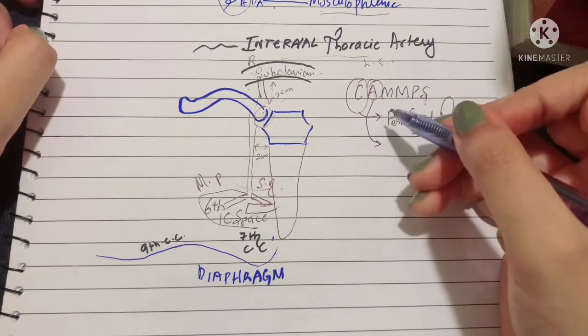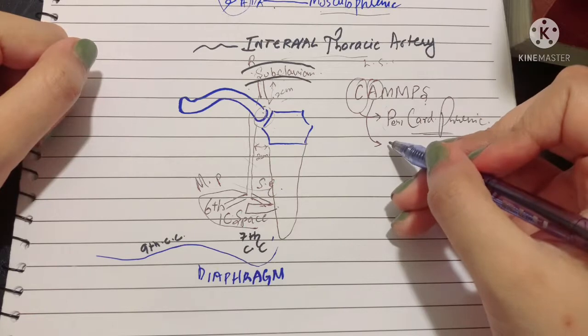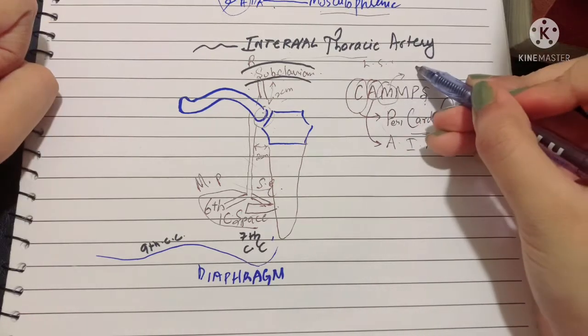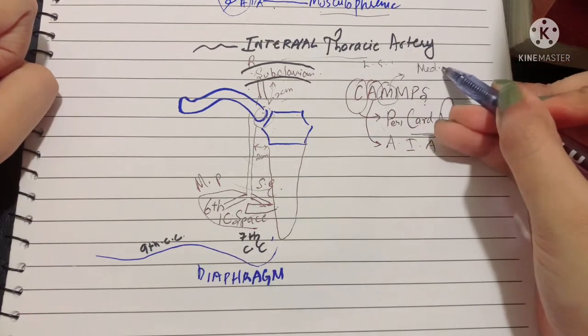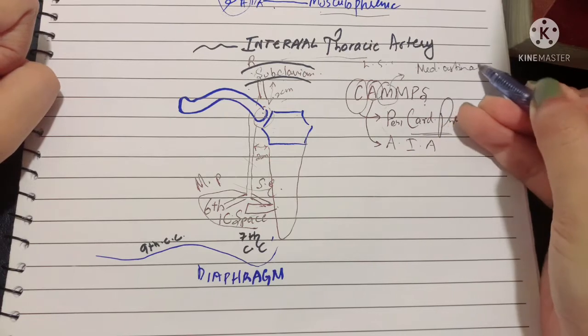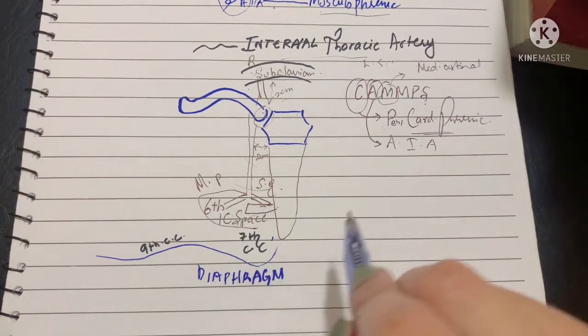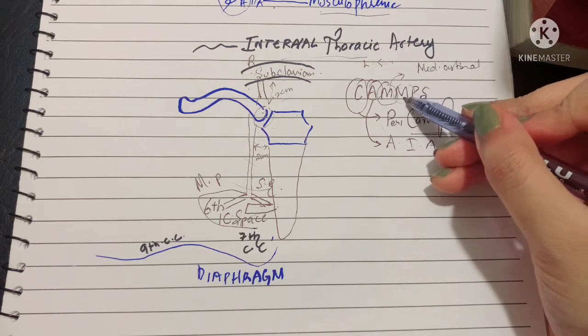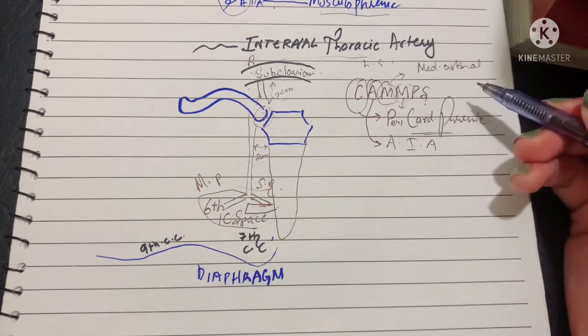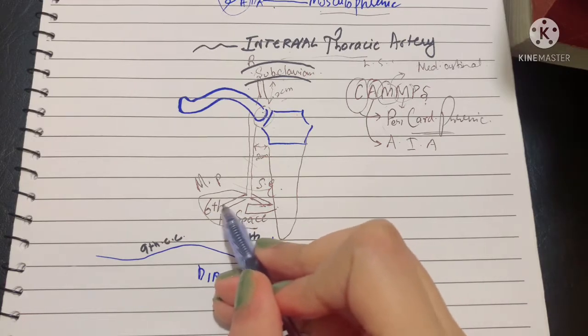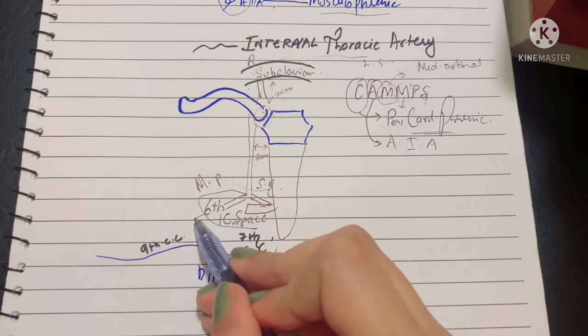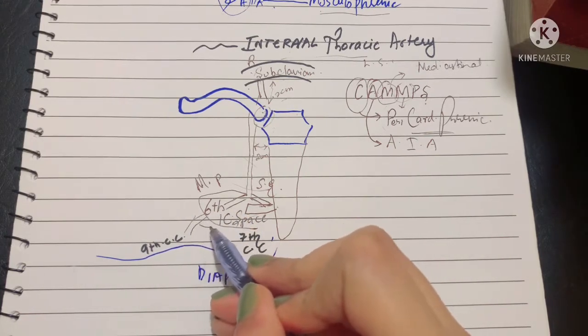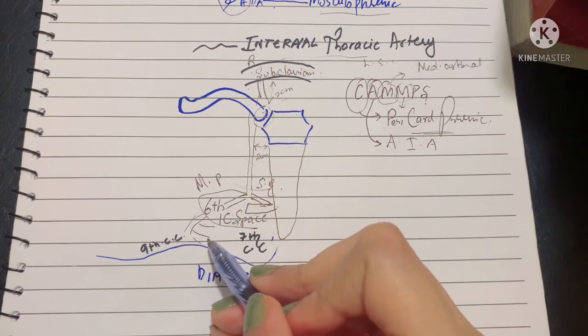Then we have M for the mediastinal arteries, which supply the remains of the thymus and the mediastinal fat. Another M is for the musculophrenic artery, which is its terminal branch. The musculophrenic artery gives off the anterior intercostal arteries of the lower three spaces.